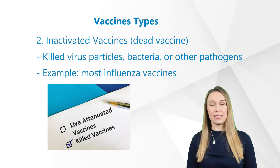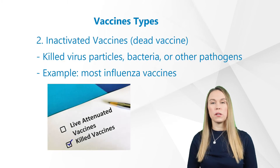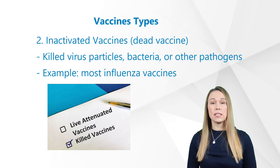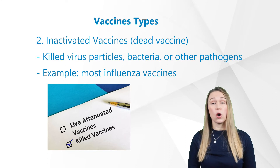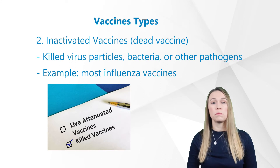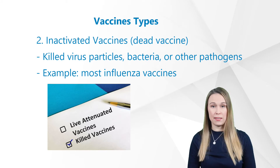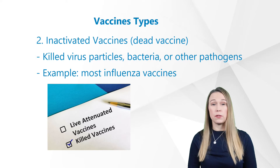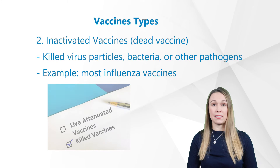An inactivated vaccine, also sometimes called a dead vaccine, is a vaccine consisting of virus particles, bacteria, or other pathogens that have been grown in a culture and then killed to destroy disease-producing capacity. Examples include the IPV polio vaccine and most influenza vaccines.